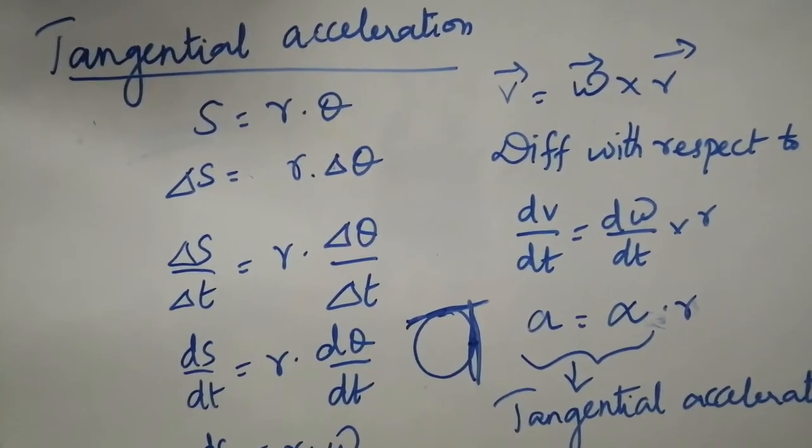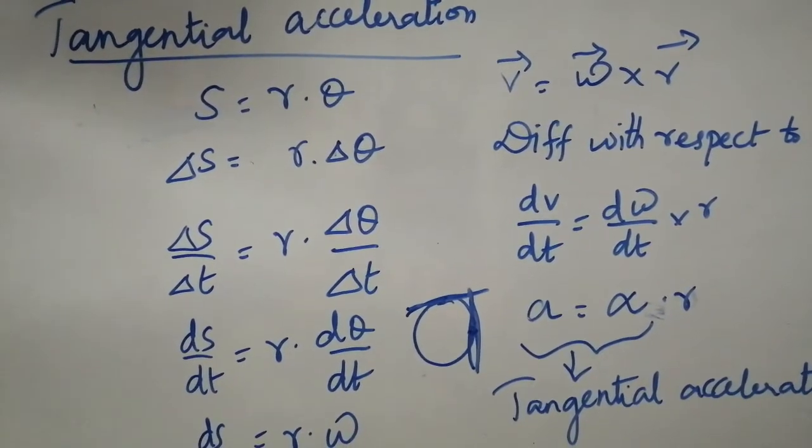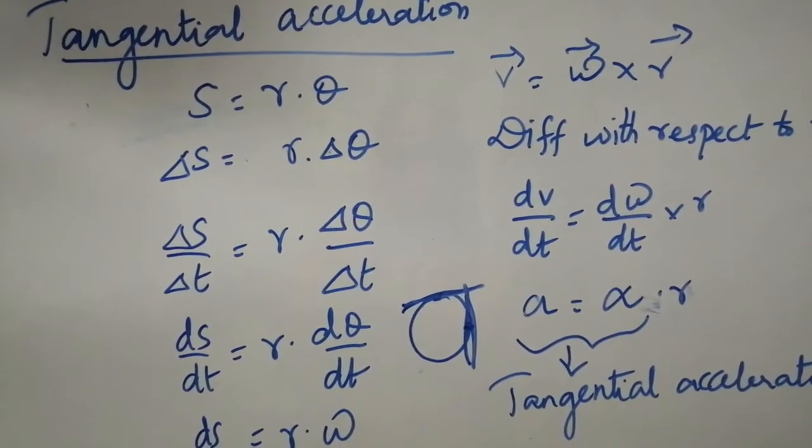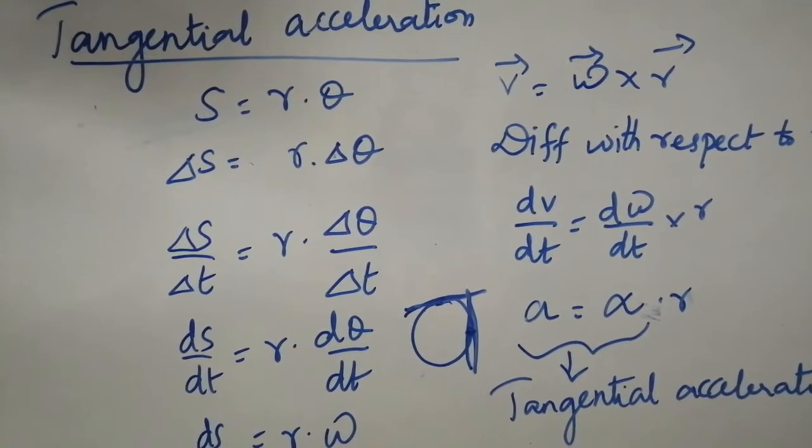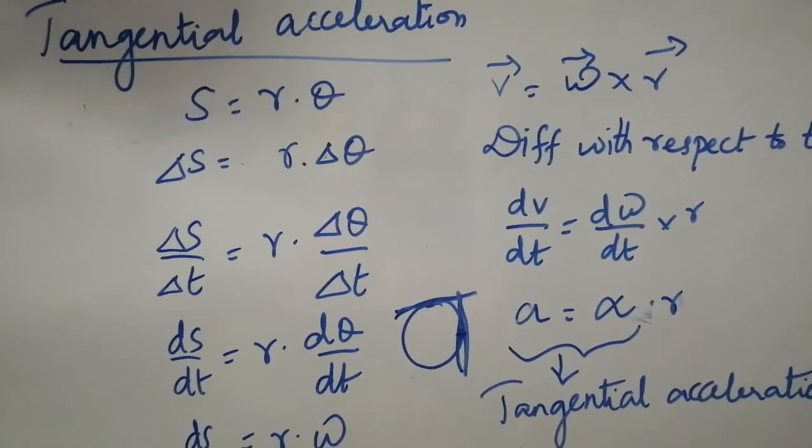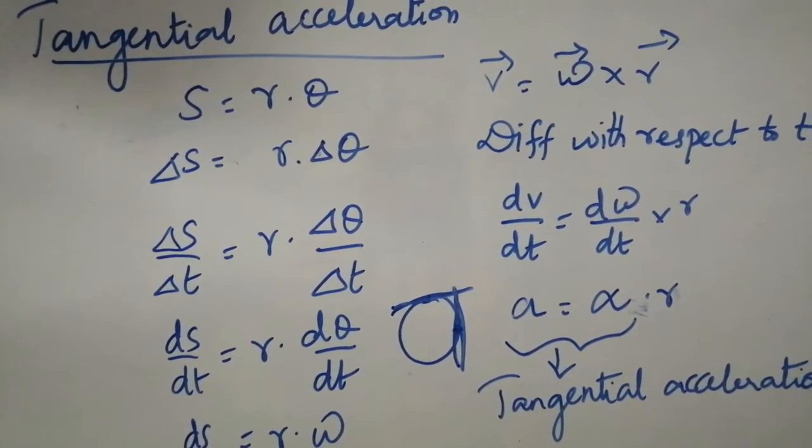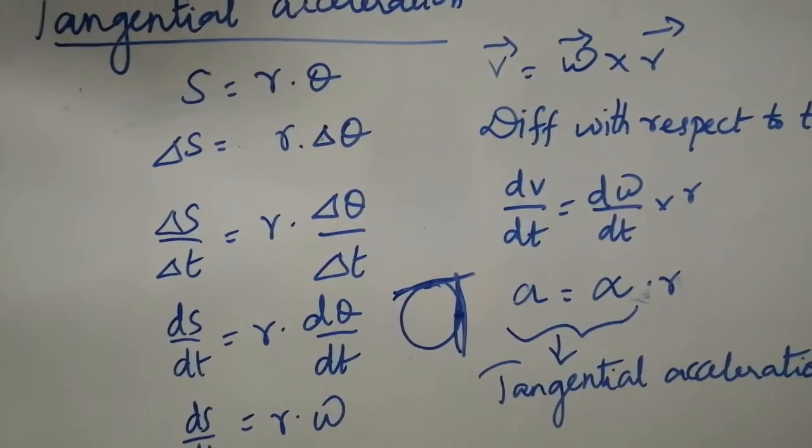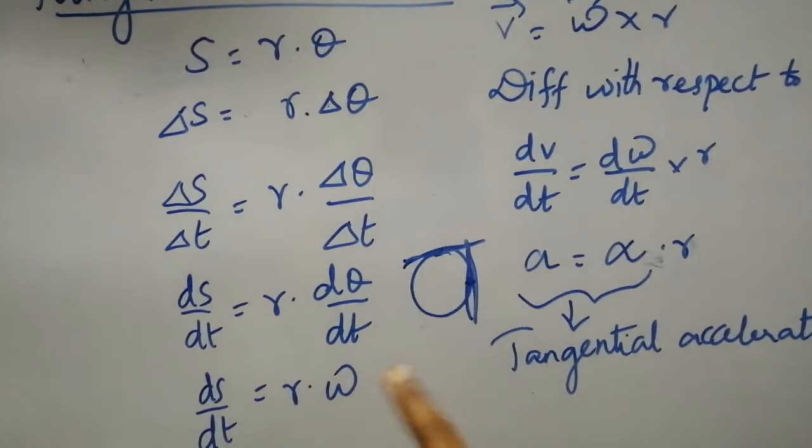So from this let me go in for the differentiation value. Differentiation can be D or delta, both are one and same. So it is del S is equal to R into del theta. Now differentiate this with respect to T. So it is del S by del T equal to R into del theta by del T. As I said delta and D are same, so I am going to write this one as DS by DT equal to R into D theta by DT.